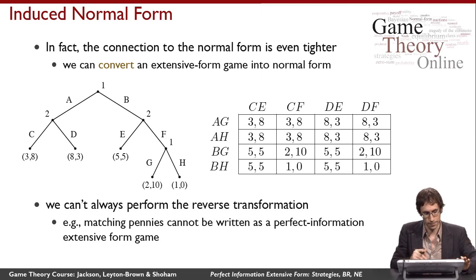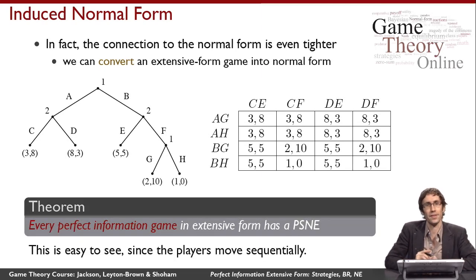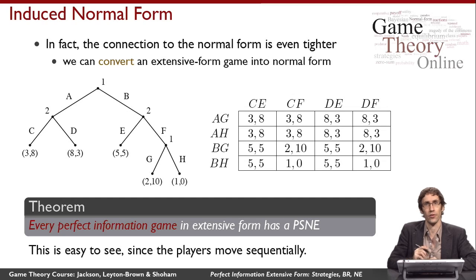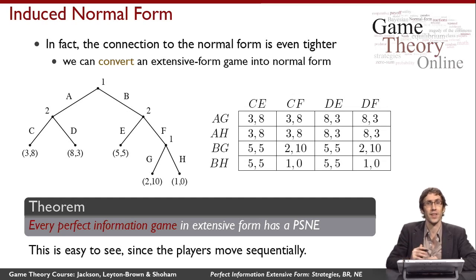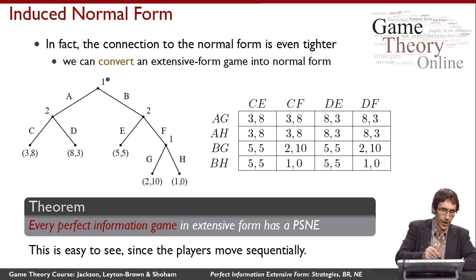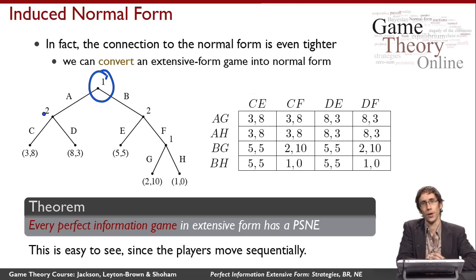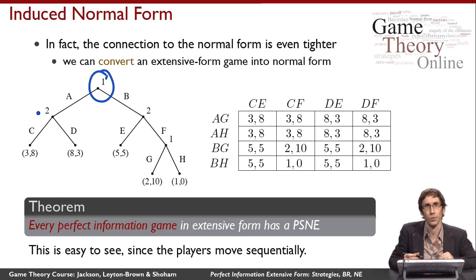There's a theorem that says every perfect information extensive form game always has at least one pure strategy Nash equilibrium — that's not true in general of normal form games. Matching pennies, for instance, doesn't have a pure strategy equilibrium. Intuitively, randomization often serves to confuse the other player, but in a perfect information game player two gets to see what player one has done regardless, so randomization can't create equilibrium opportunities that weren't already there.